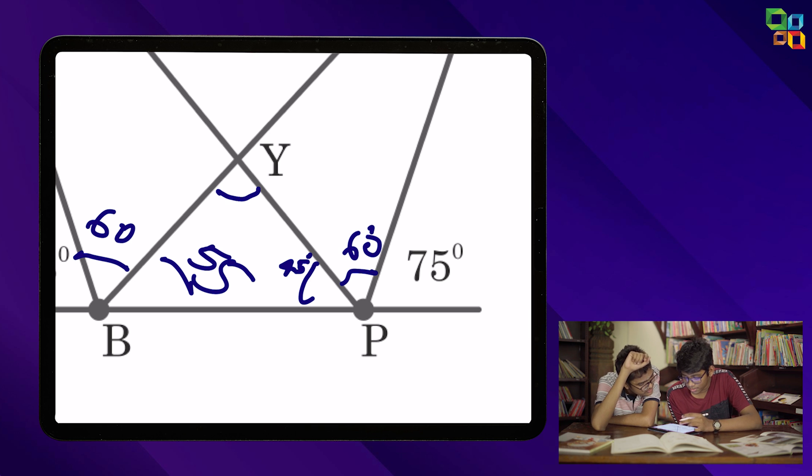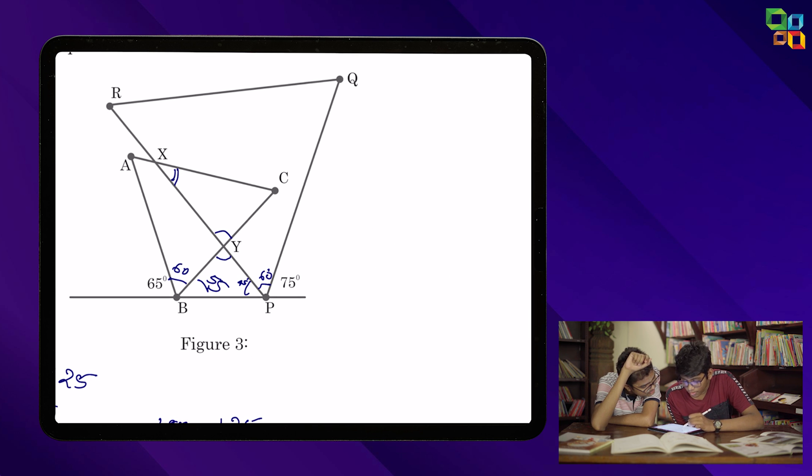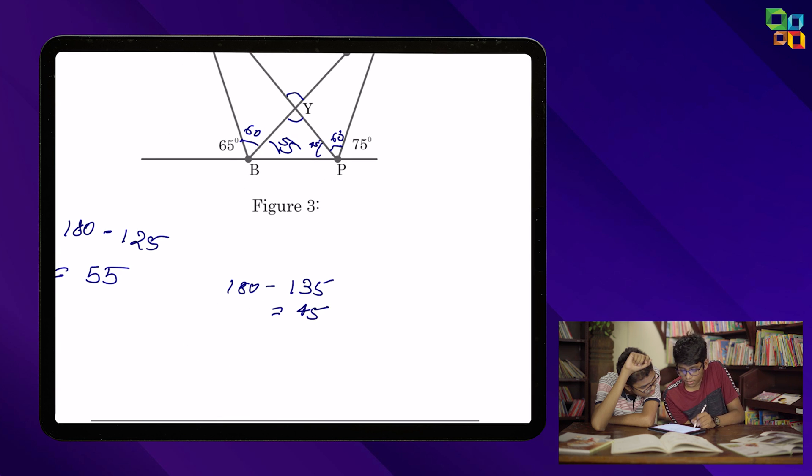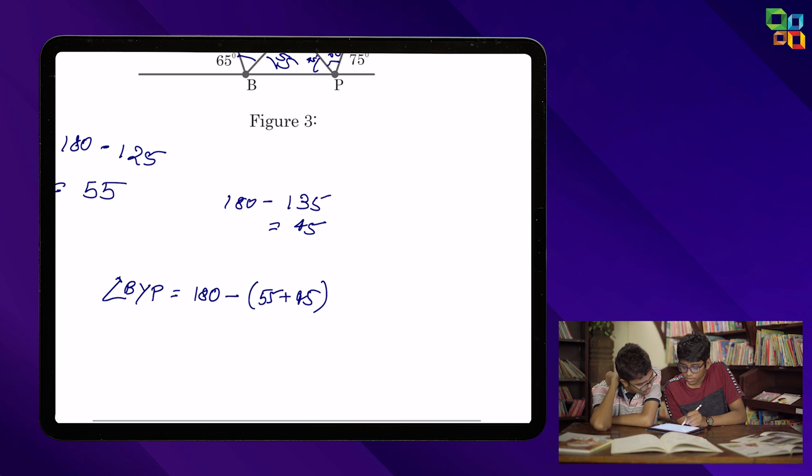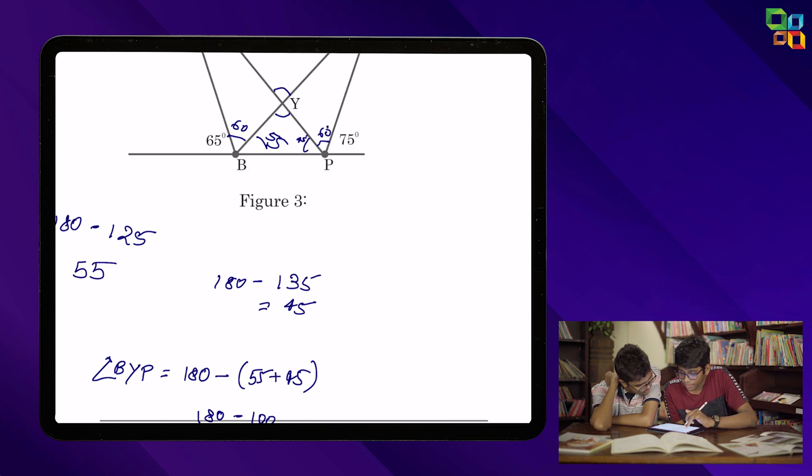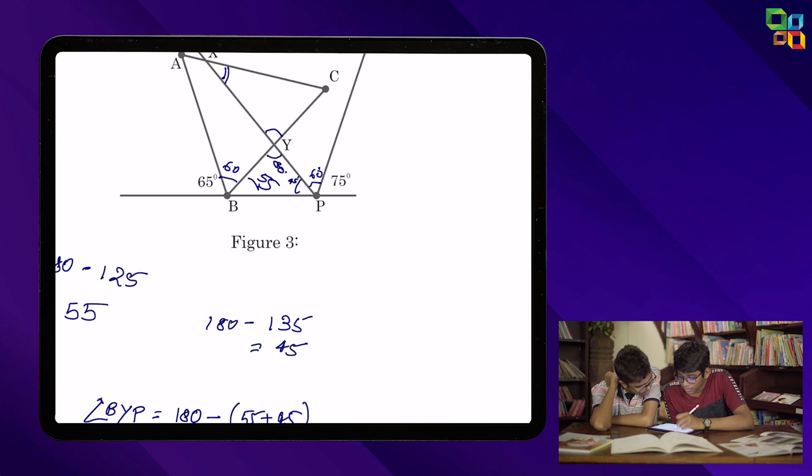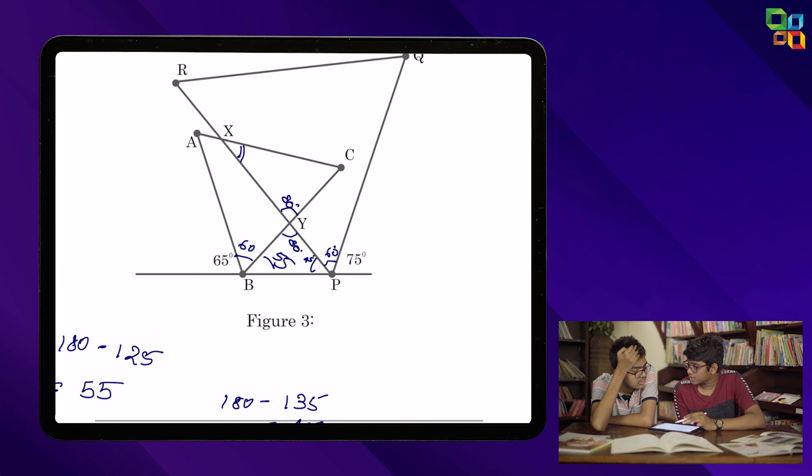So just find this. We can find angle BYP. So angle BYP is equal to 180 minus 55 plus 45. It's directly from the fact that sum of the angles in the triangle is 180 degrees. So this is 80, and even this is 80, and even this is 80 because they have vertical opposite angles. Now we know that ABC is equilateral, so angle ACB is 60 degrees. Correct.